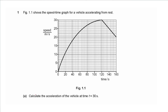Part a says calculate the acceleration of the vehicle at time 30 seconds. At 30 seconds we need to use the gradient of the graph, but this part of the graph is a curve, so we need to draw a tangent to get the gradient at this point. We draw a line just touching the graph at that point — this is a good tangent. Not all of you will draw the same exact line or take the same exact points.